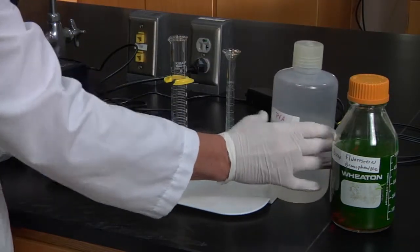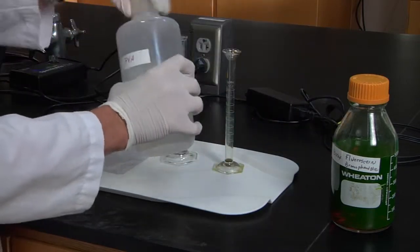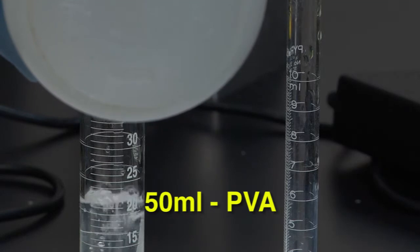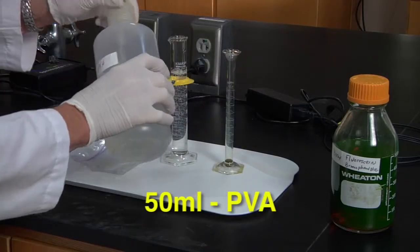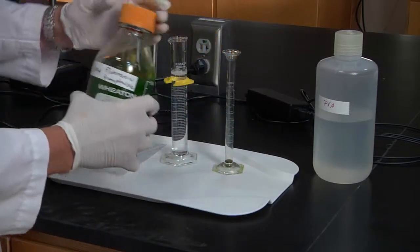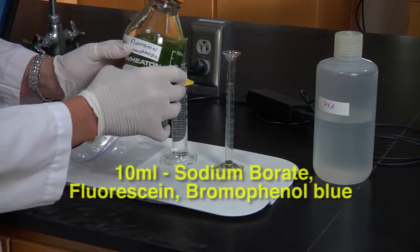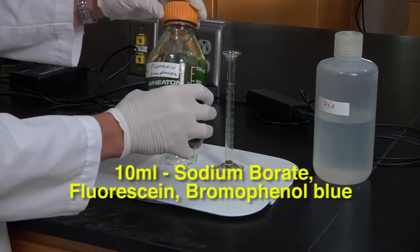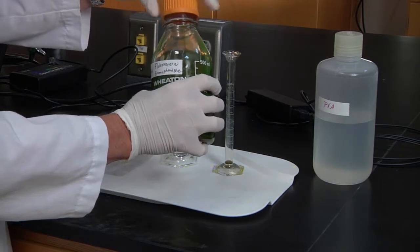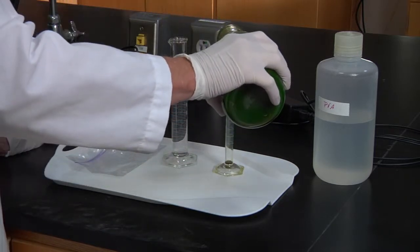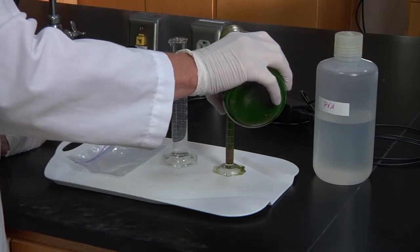We're going to use polyvinyl alcohol, and I'm going to measure 50 milliliters. And then we're going to use 10 milliliters of sodium borate with fluorescein and bromophenol blue, and these are just dyes.